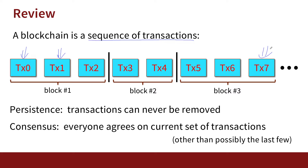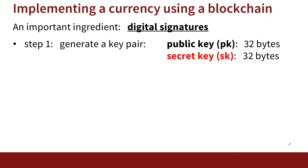The properties we said blockchains have are: the persistence property, which means that once a transaction is written to the blockchain it can never be removed; and the consensus property, which says everybody agrees on the current set of transactions written to the blockchain. The only exception is that the last few transactions may still have disagreement, but that converges after a while so that eventually everybody agrees which transactions should be on the blockchain.